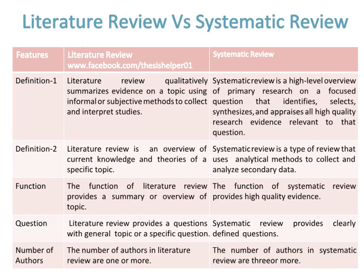Definition 2: A Literature Review is an overview of current knowledge and theories of a specific topic, while a Systematic Review is a type of review that uses analytical methods to collect and analyze secondary data. The function of a Literature Review is to provide a summary or overview of a topic, while the function of a Systematic Review is to provide high-quality evidence.